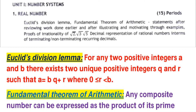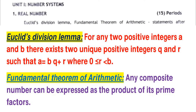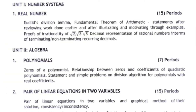Moving on — the Fundamental Theorem of Arithmetic states that any composite number can be re-expressed as the product of prime factors. You have to remember these statements and apply them to solve problems. Next, there are important questions related to proofs of irrationality of √2, √3, √5, and their combinations. For short questions, decimal representation of rational numbers in terms of terminating and non-terminating recurring decimals is also very important.